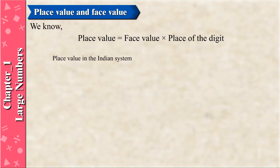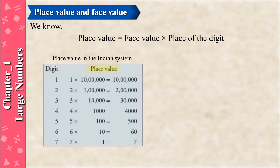Place value in the Indian system. Digit 1: 1 × 10 lakh = 10 lakh. Digit 2: 2 × 1 lakh = 2 lakh. Digit 3: 3 × 10,000 = 30,000. Digit 4: 4 × 1,000 = 4,000. Digit 5: 5 × 100 = 500. Digit 6: 6 × 10 = 60. Digit 7: 7 × 1 = 7.